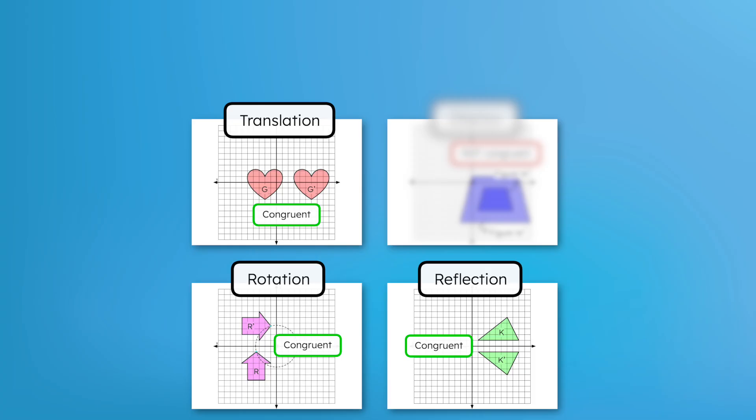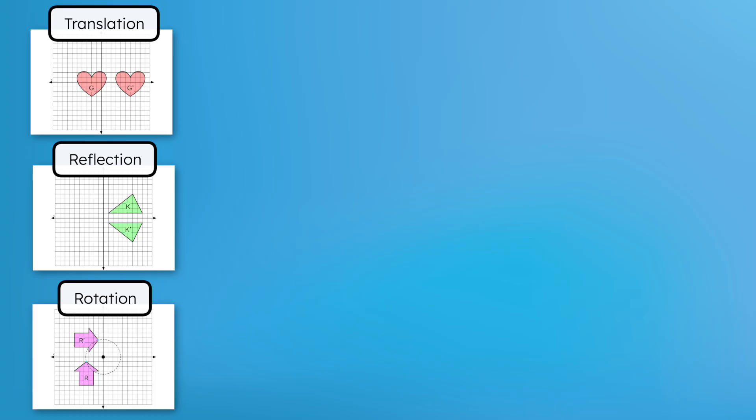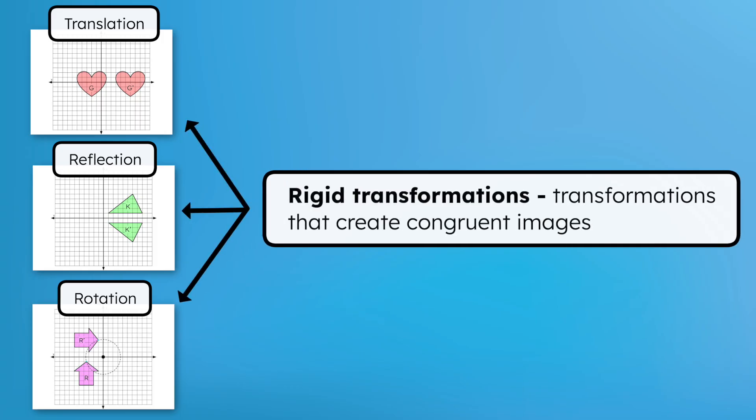For the remainder of this unit, we're going to focus on just these three transformations. Because these transformations do not change the size or shape of the pre-image, we call them rigid transformations, which are transformations that create congruent images. Translation, reflection, and rotation are rigid transformations.